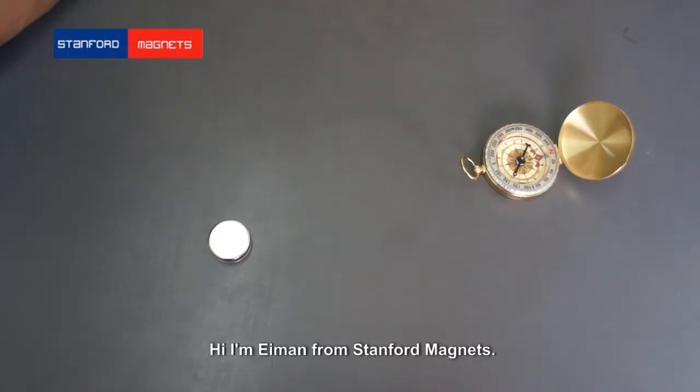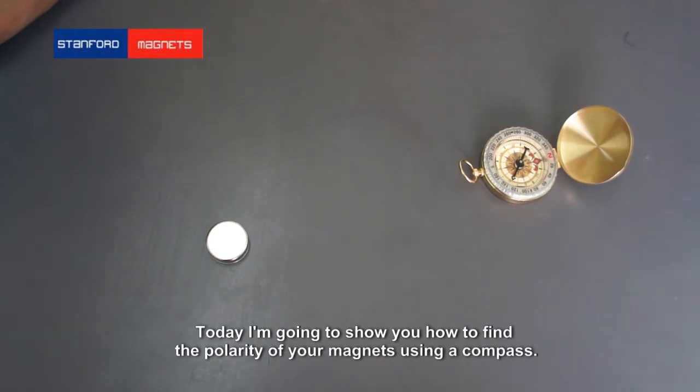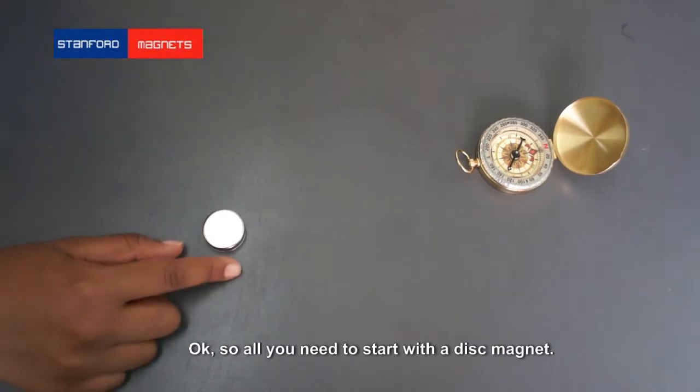Hi, I'm Iman from Stanford Magnets. Today I'm going to show you how to find the polarity of your magnets using a compass. Ok, so all you will need to start is a disc magnet.